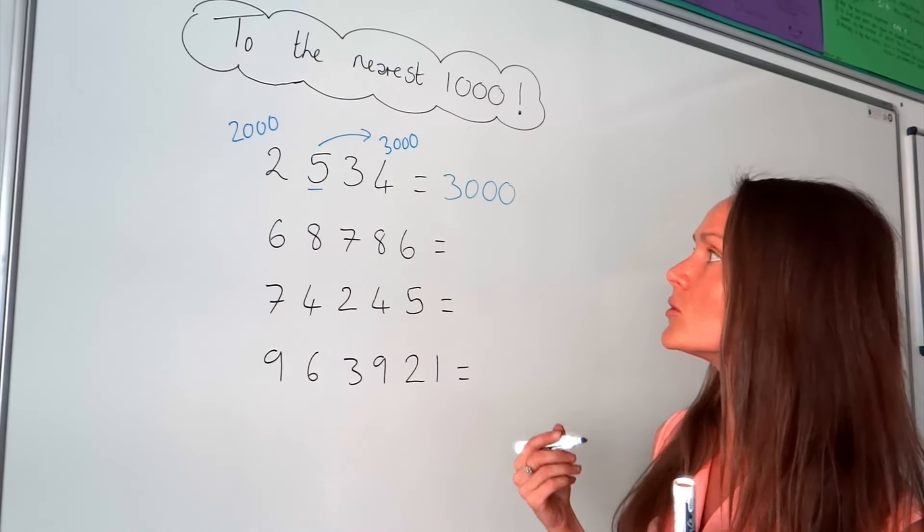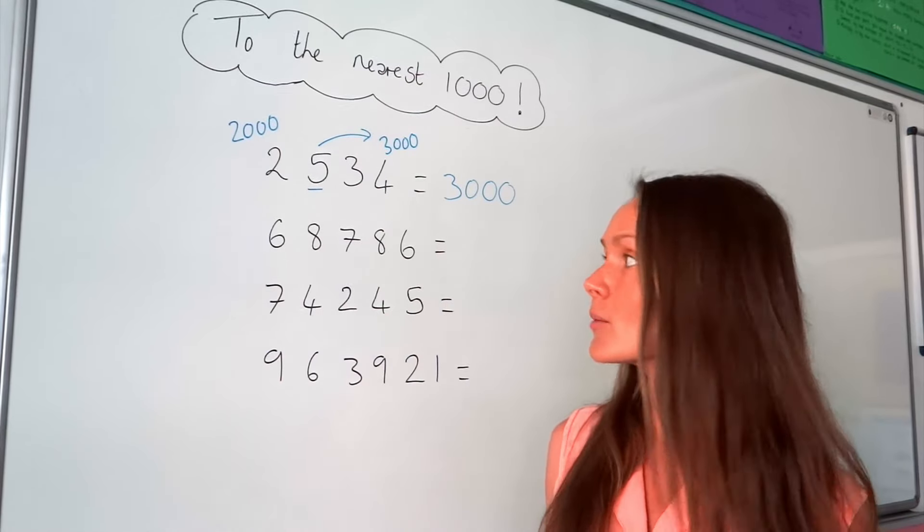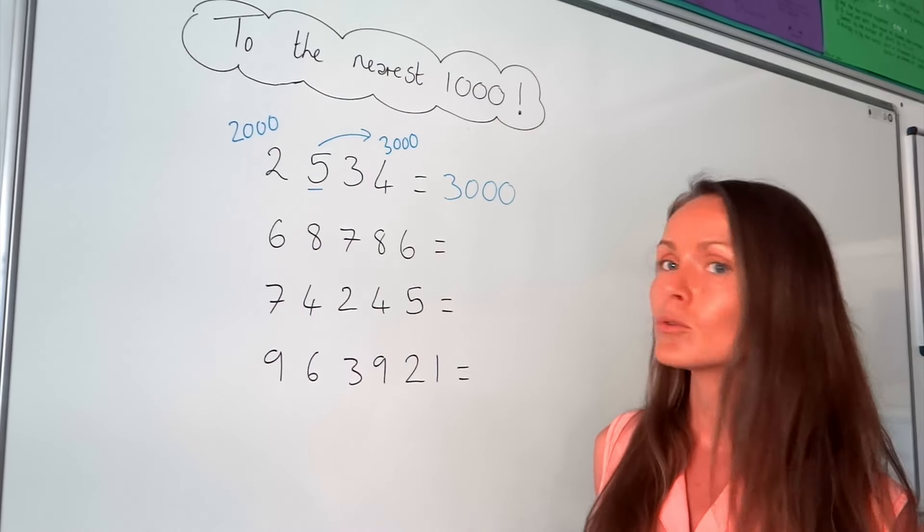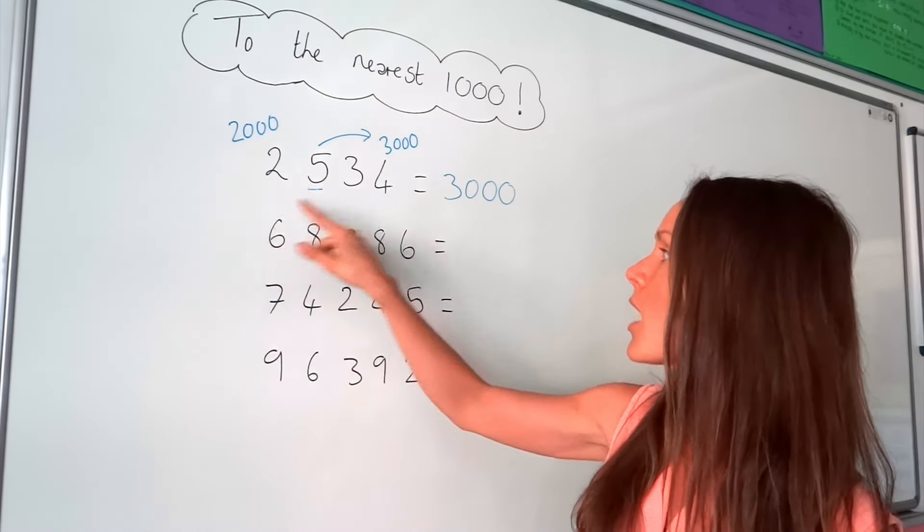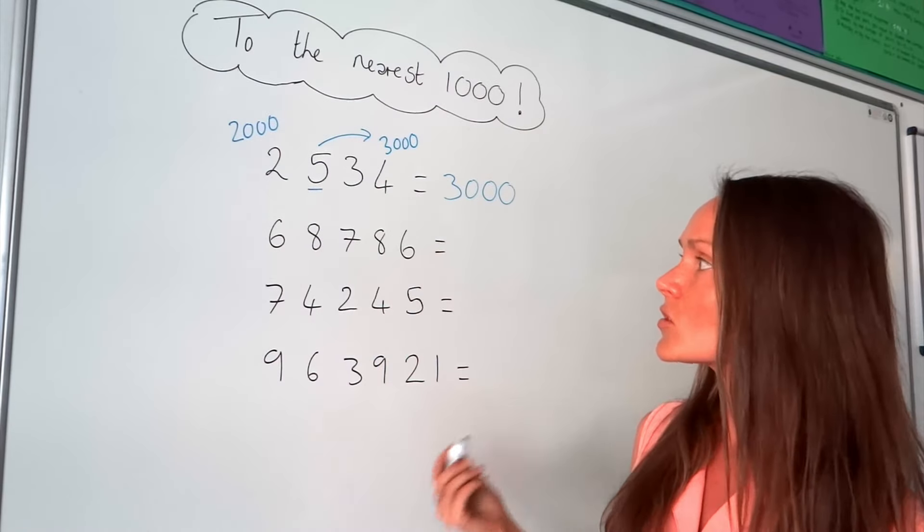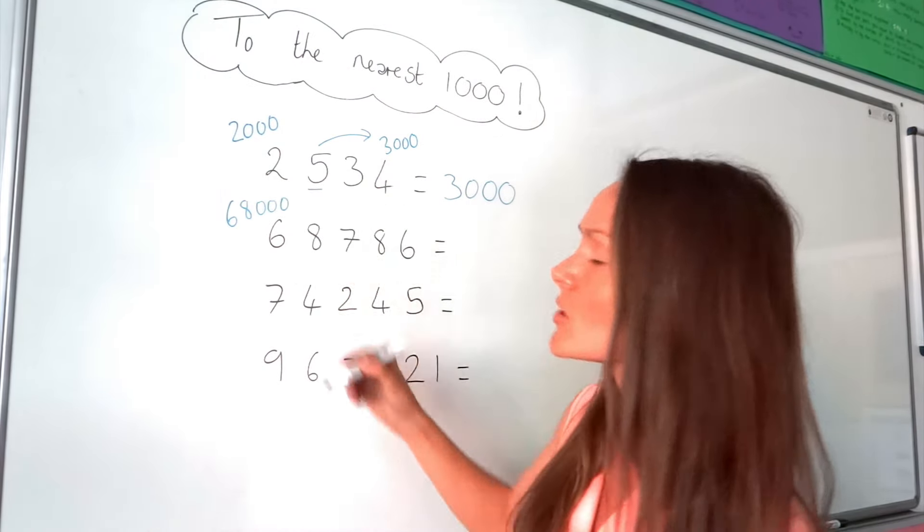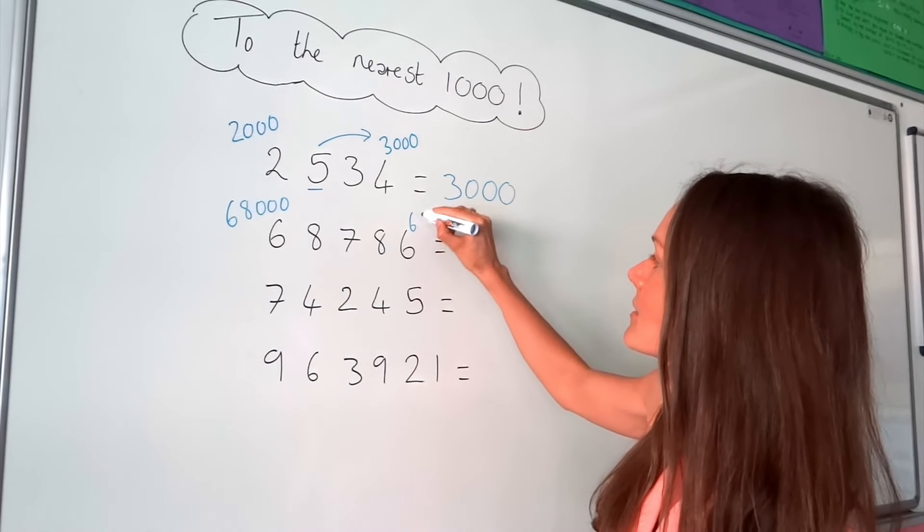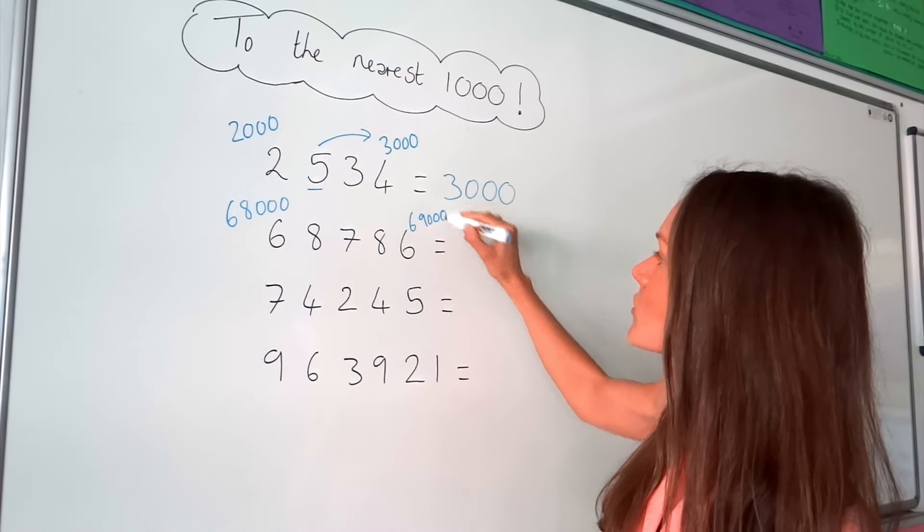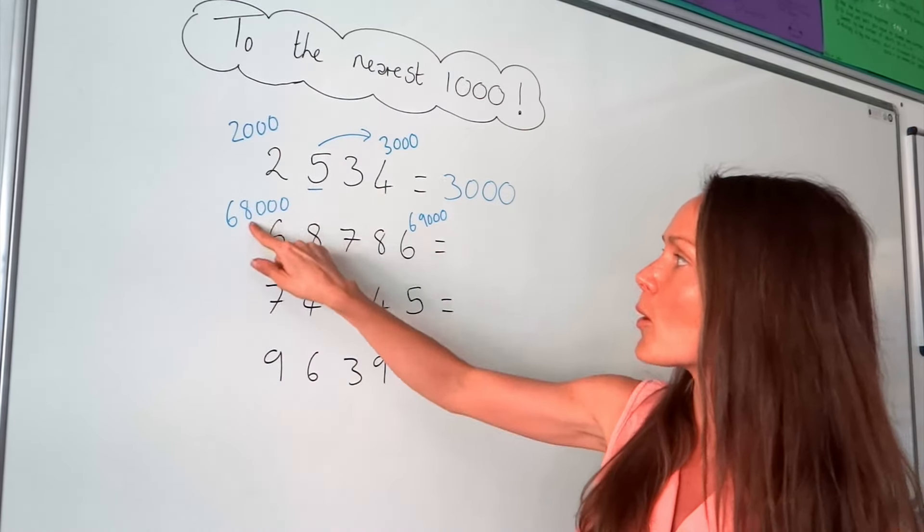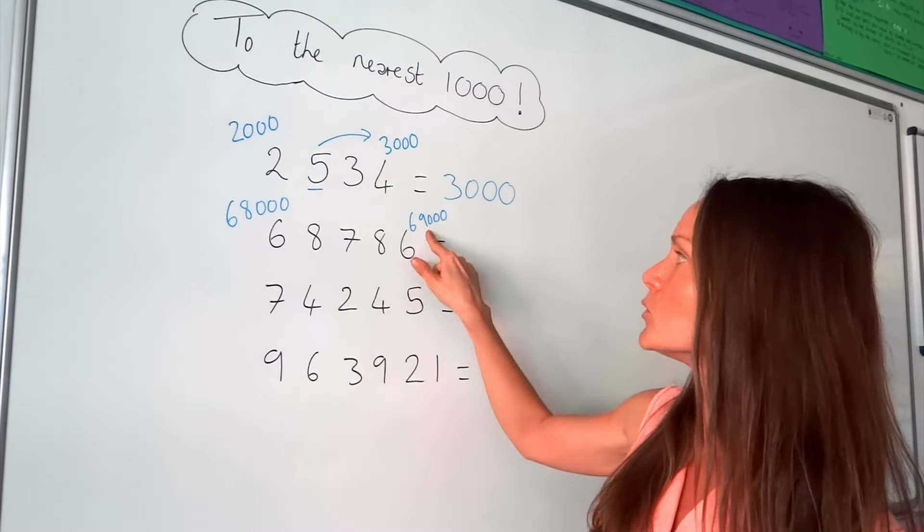So on to the next one. I'm going to use exactly the same method, and I'm going to write down the multiples of 1,000 that fall either side of this number. So the smaller one will be 68,000, and the bigger one will be 69,000.